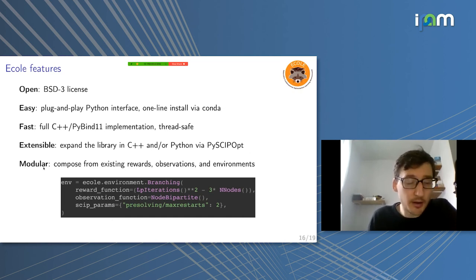It's extensible. You can expand the library in C++ if you want to keep things fast, but you can also just expand it in Python using the PySCIPOpt library to interface with the solver. It's also modular. It's very Pythonic, like you can combine things together. Say you have a reward function that has been defined for a specific task for branching. Then you can just reuse that reward function for cutting planes. You can compose reward functions together. This is the branching environment. My reward function is number of LP iterations squared minus three times number of nodes. So maybe it doesn't make much sense, but you can do things like that very easily. You can prototype super easily new reward functions.